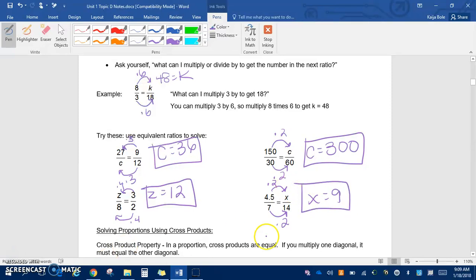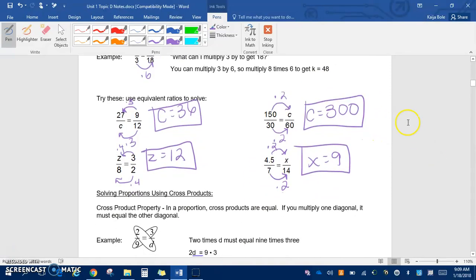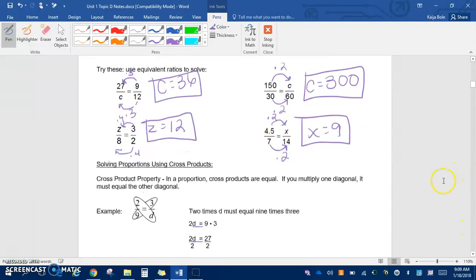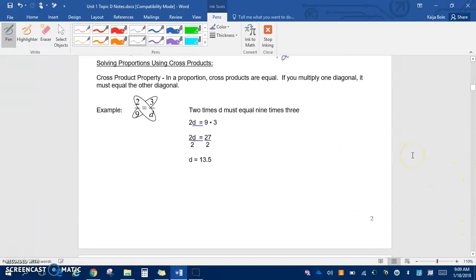So that's good and all, but sometimes we get these numbers and we just don't have a clue how to get there, and it involves some decimals or fractions, and that's just not fun. So we're going to use this new method now. These are called cross products. The cross product property is that in a proportion, cross products are equal.